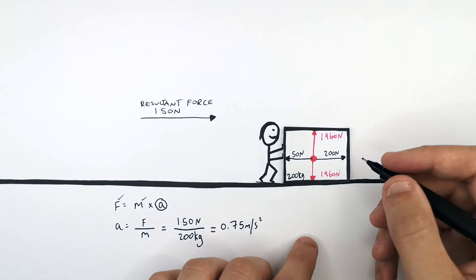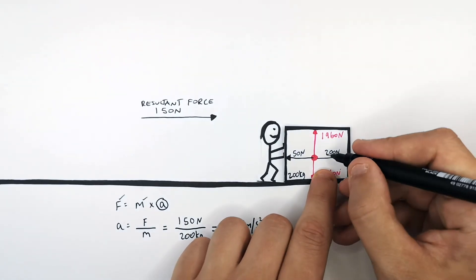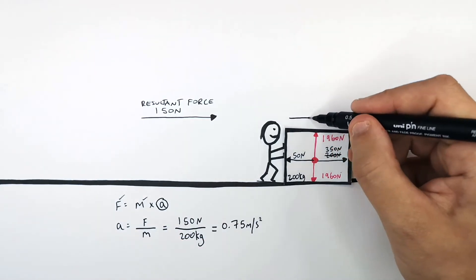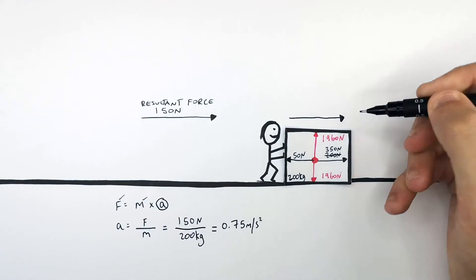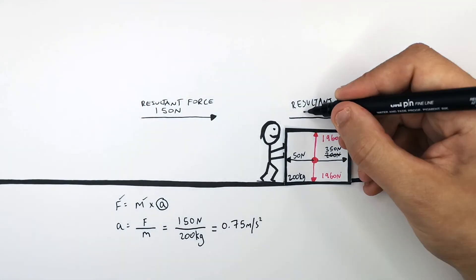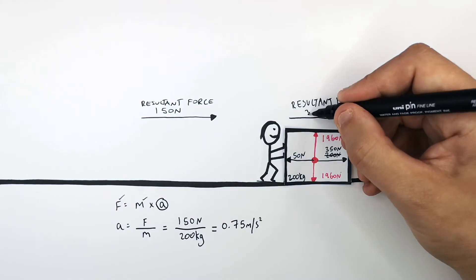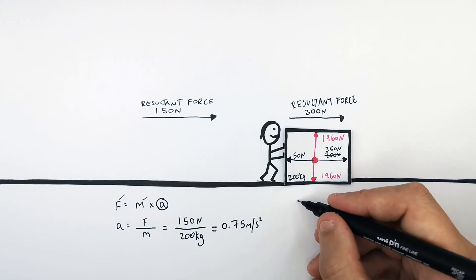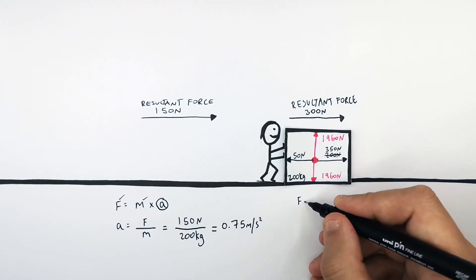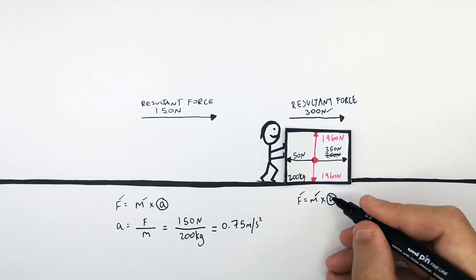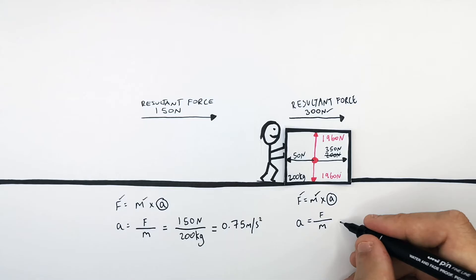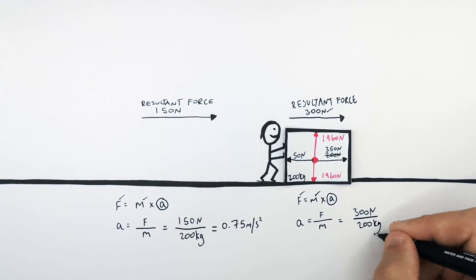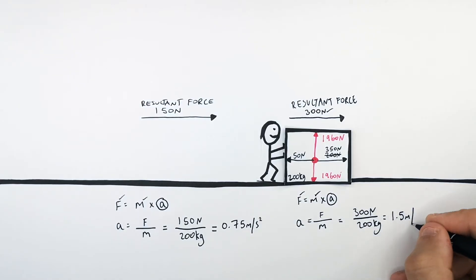This person now increases the push force acting on the box — they are now pushing with a forward force of 350 newtons. The frictional forces are still 50 newtons. So the resultant force acting on the box is 350 minus 50 newtons, which equals 300 newtons forwards. Recalling F equals M times A and rearranging for A: acceleration equals force divided by mass. Substituting the numbers: 300 newtons divided by 200 kilograms equals 1.5 meters per second squared.